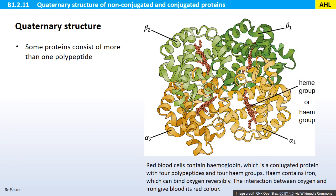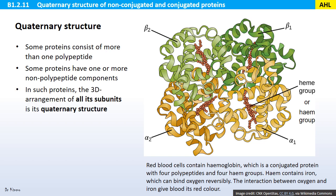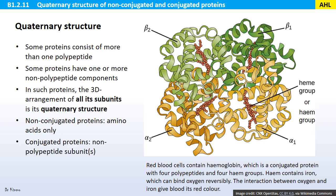Finally, quaternary structure. Some proteins consist of more than one polypeptide, and some have one or more non-polypeptide components. In such proteins, the 3D arrangement of all its subunits is its quaternary structure. Proteins with amino acids only are called non-conjugated proteins, while proteins with non-polypeptide subunits are called conjugated proteins. Many enzymes are conjugated proteins.